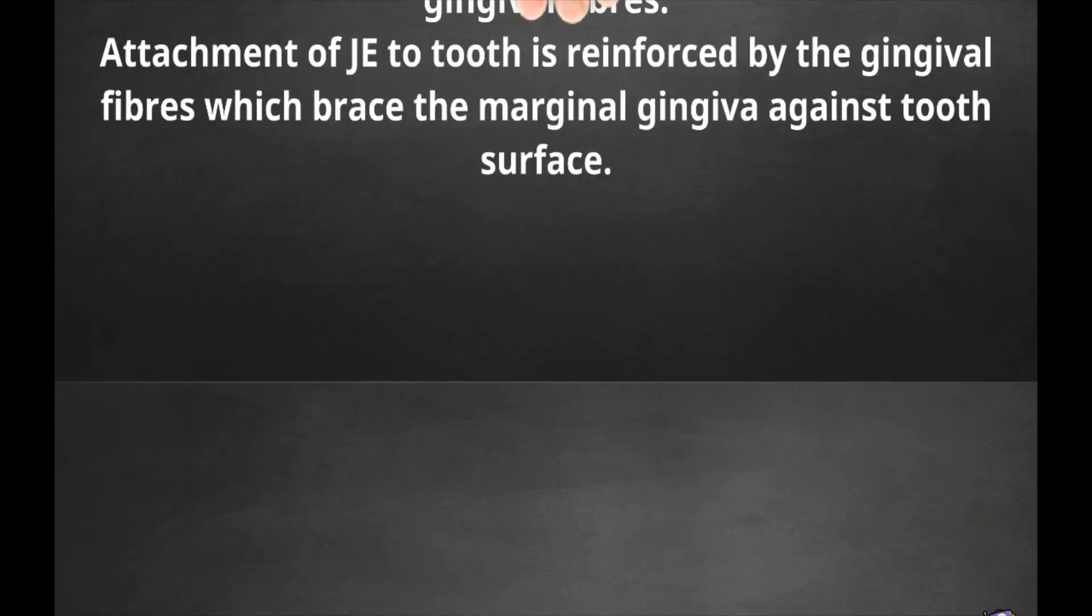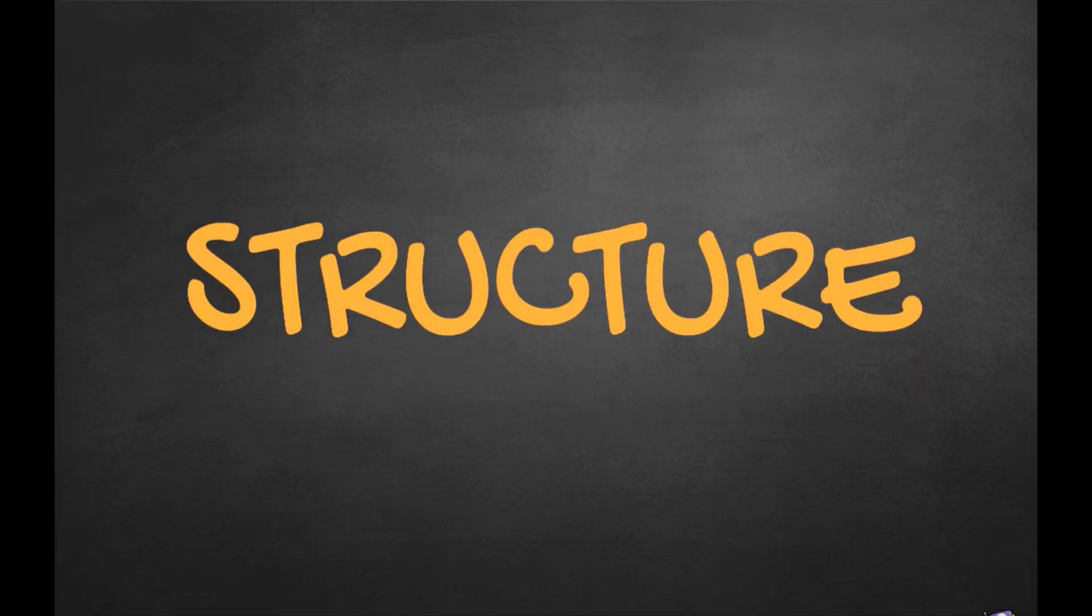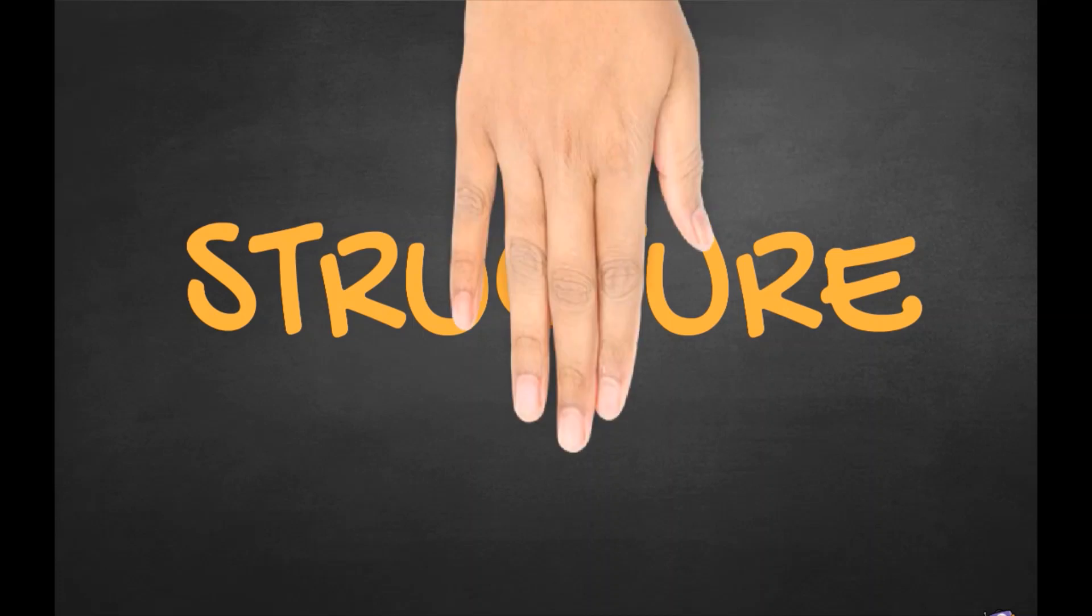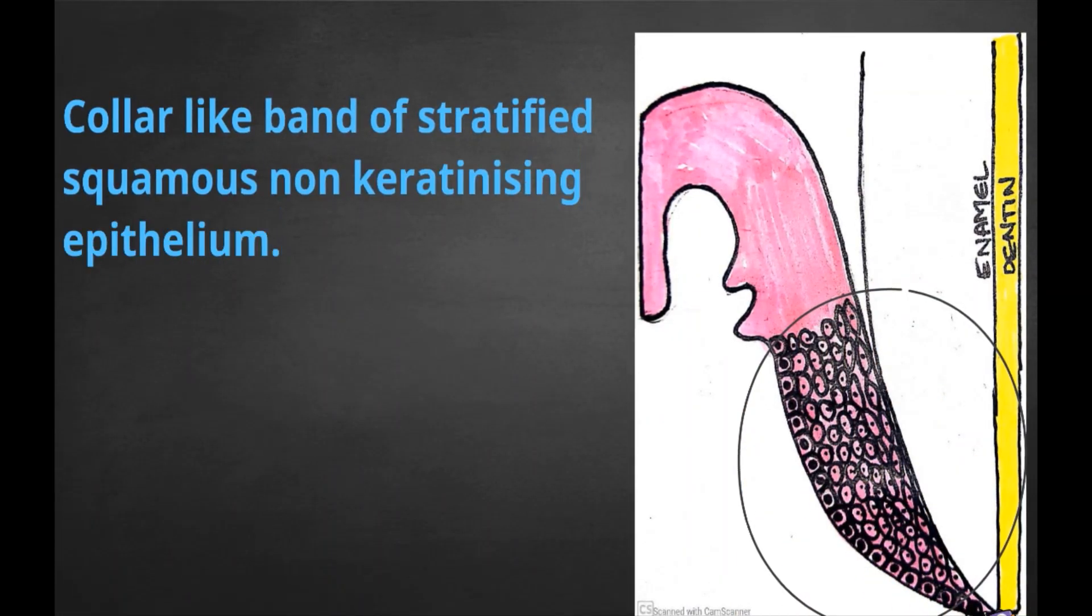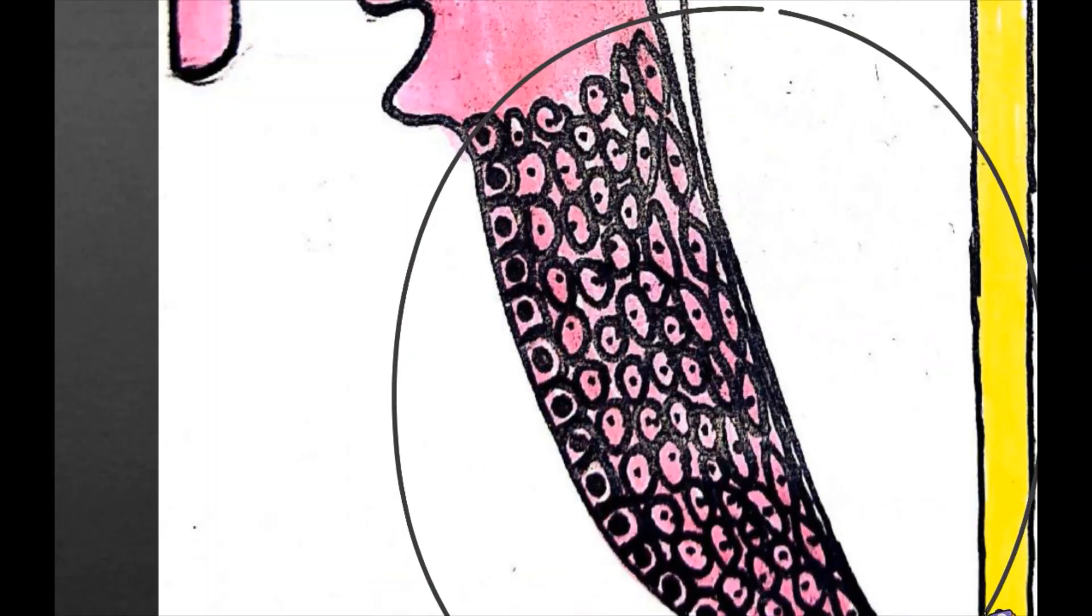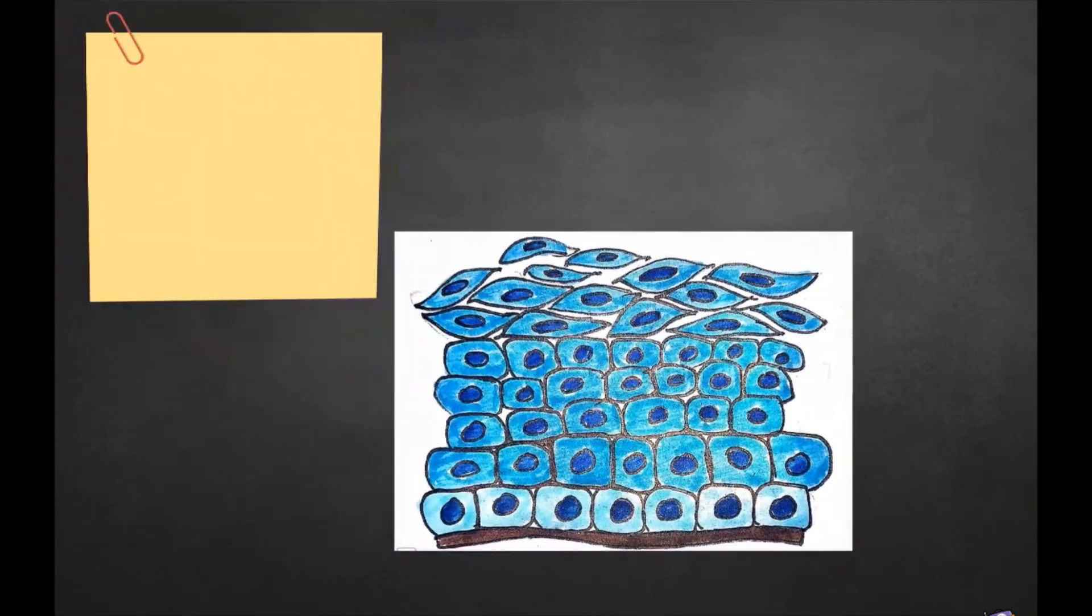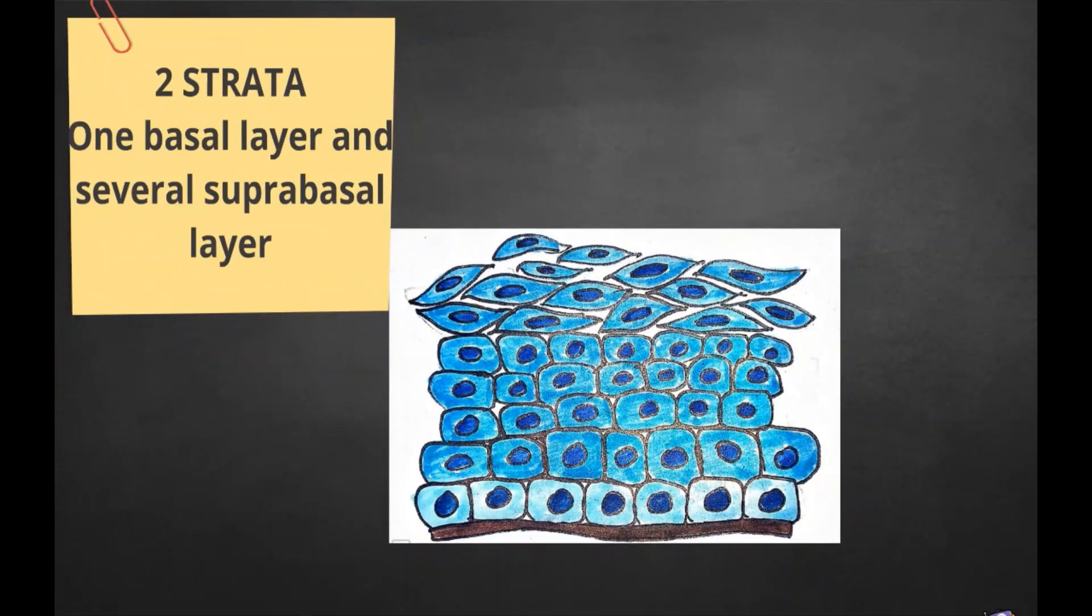Now we will explain the structure of junctional epithelium. Junctional epithelium consists of a collar-like band of stratified squamous non-keratinizing epithelium. Cells of junctional epithelium are arranged into two strata: one basal layer facing connective tissue and several suprabasal layers which face the tooth surface.